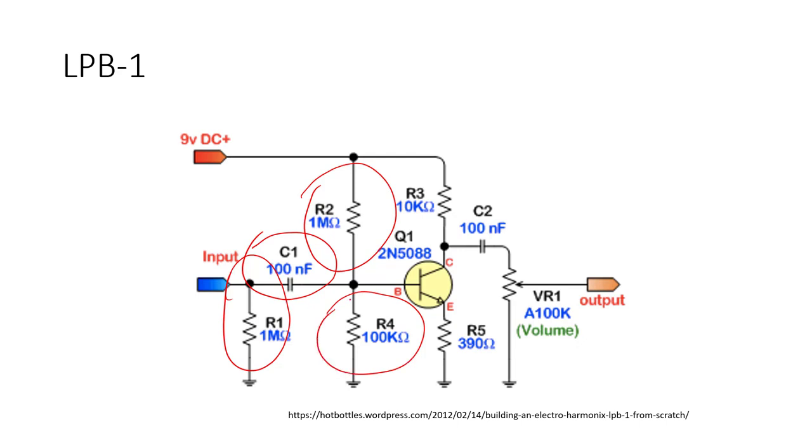The load resistor for the common emitter amplifier is 10 kilohms. There is also an emitter degeneration resistor of value 390 ohms.